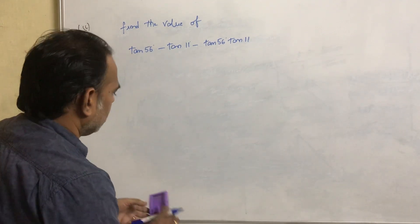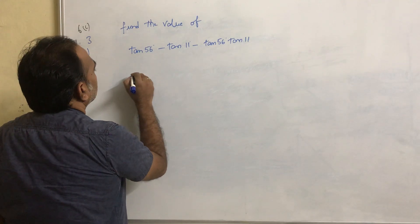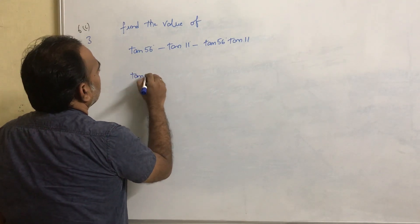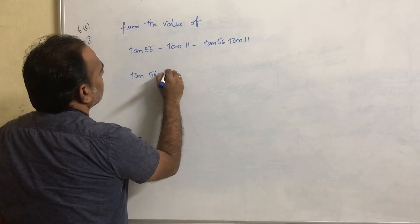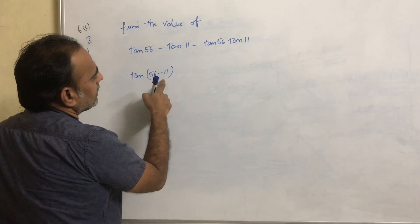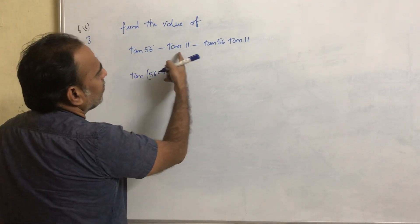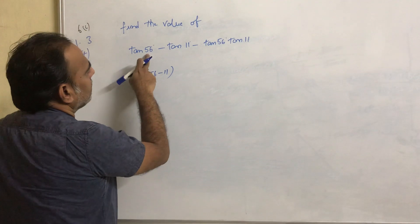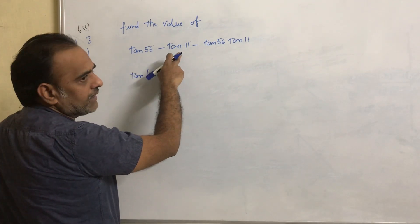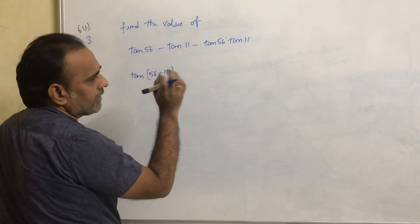That is the logic - simple. Just consider tan(56° - 11°). Why I consider 56 minus 11 is by looking at these terms. See, tan 56° - tan 11° is there.